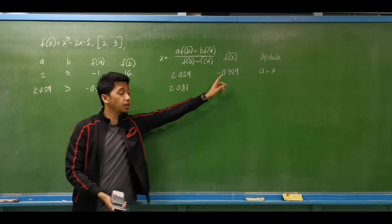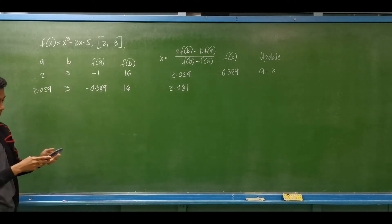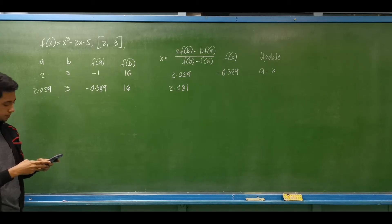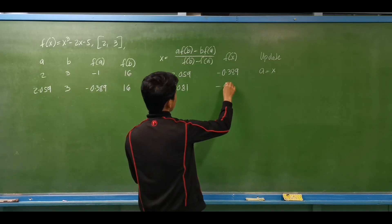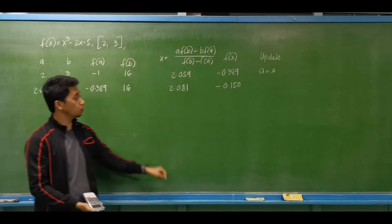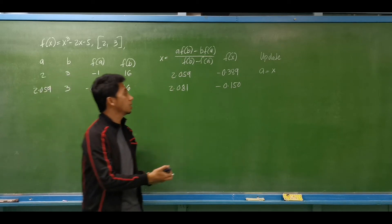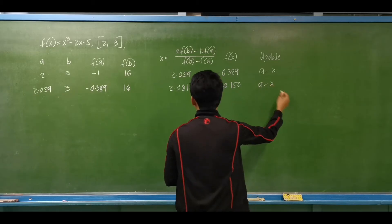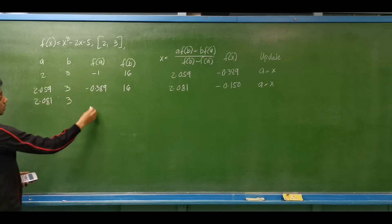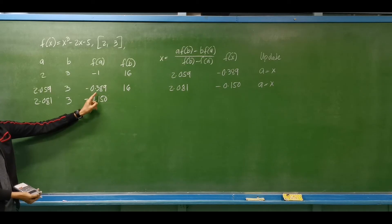Using X equals 2.081: 2.081³ minus 2(2.081) minus 5 equals approximately negative 0.15. We are getting closer to 0. Since this is still negative, and negative 0.15 is closer to 0 than the previous negative 0.389, we replace our lower limit again with 2.081. The upper limit B remains 3 with F(B) equals 16.